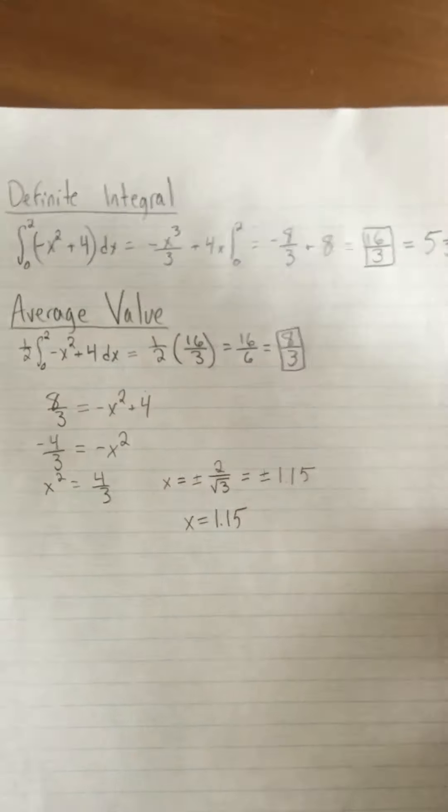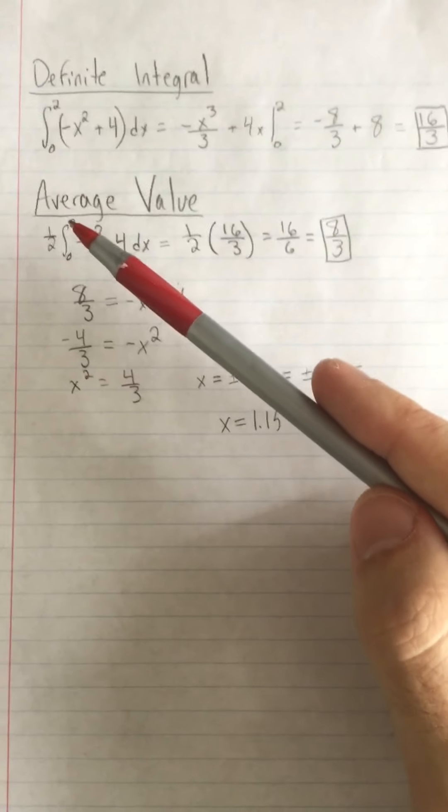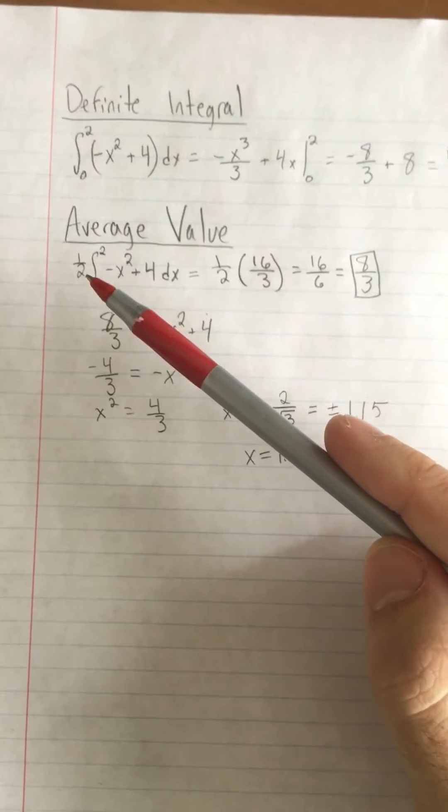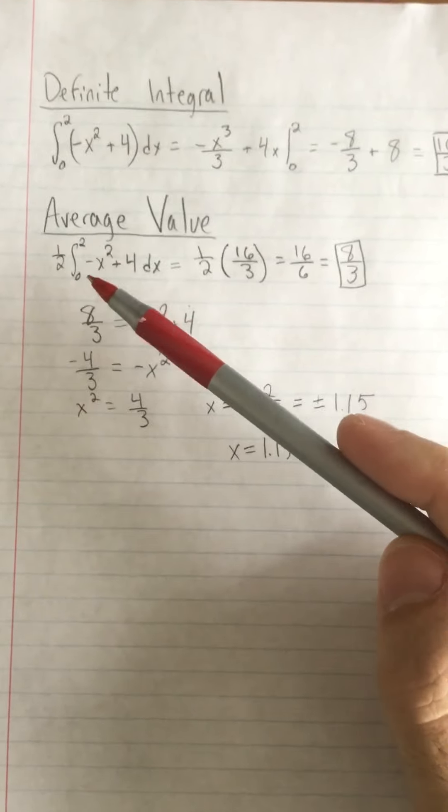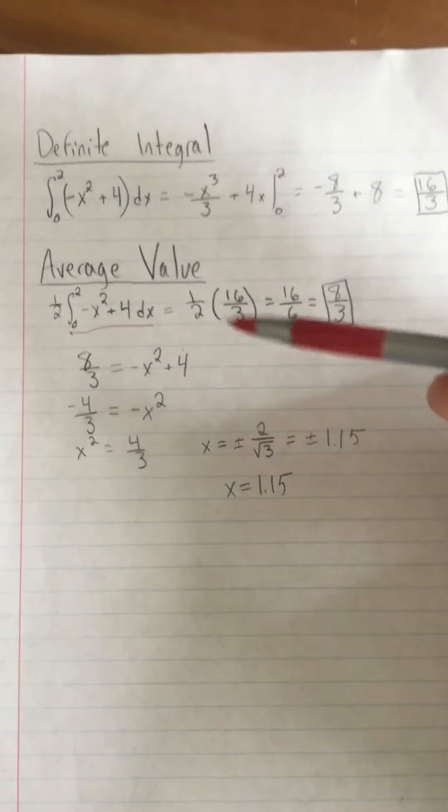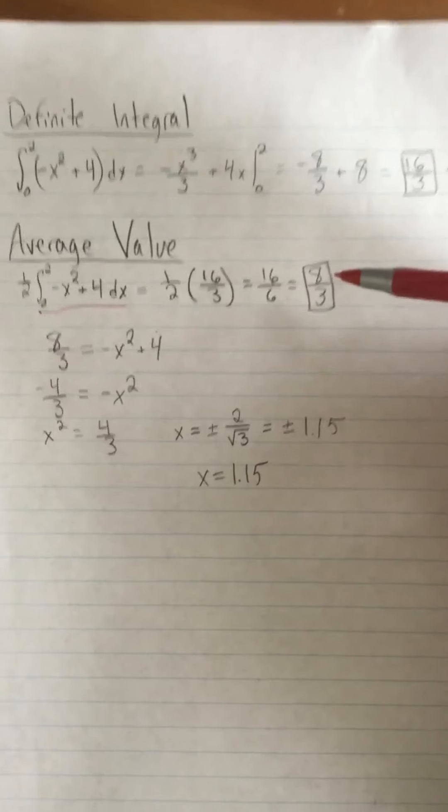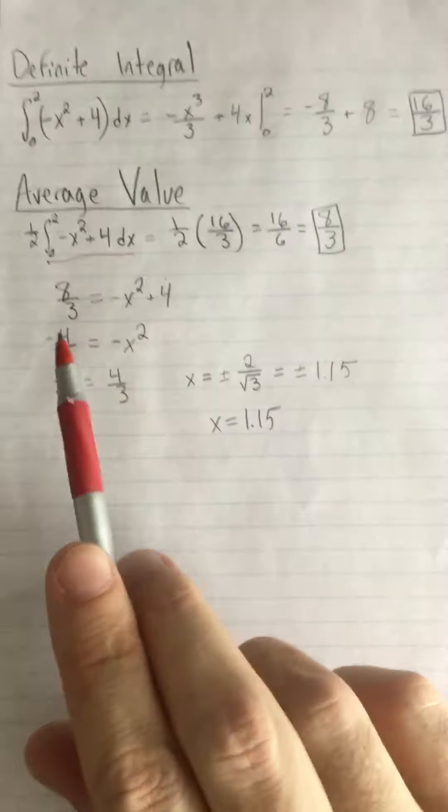And then our last step finding the average value. We are using this formula that I gave you: one over b minus a times basically taking the definite integral here. What I did was this part here we already found that, we found that to be 16 thirds, so I just plugged 16 thirds in and multiplied it by one half to get this eight thirds. And then the last part of these questions said that we want to figure out what x values give me this average value.